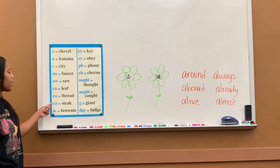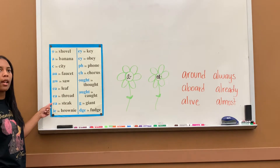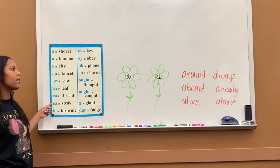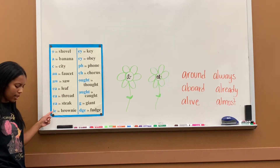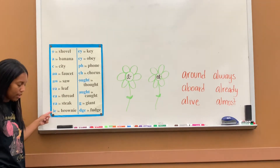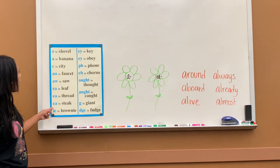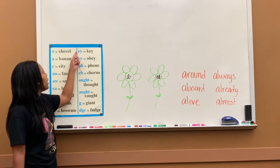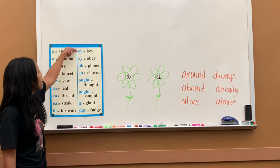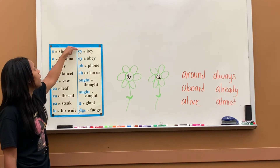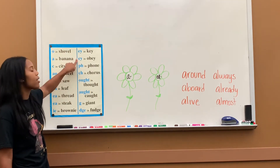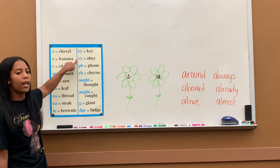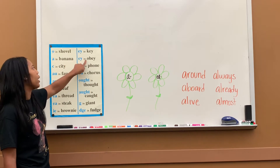EA says a in stake. IE says e in brownie. EY says e in key. EY says a in obey.